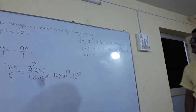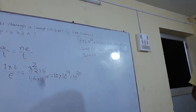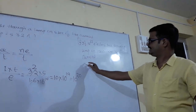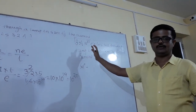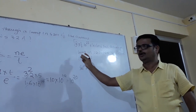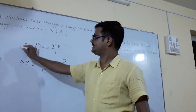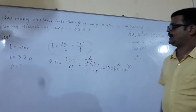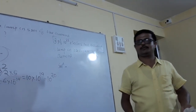Next problem: if 10 to the power 22 electrons pass through a lab in 10 seconds, find the electric current. Let me read the question carefully. What is the formula? I will show you the formula.